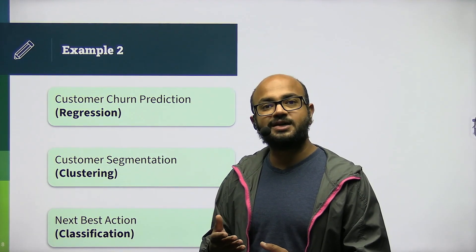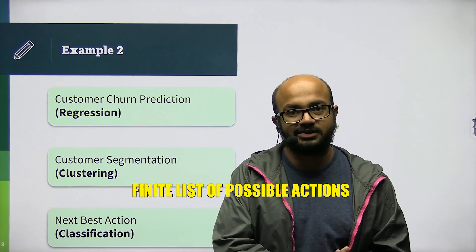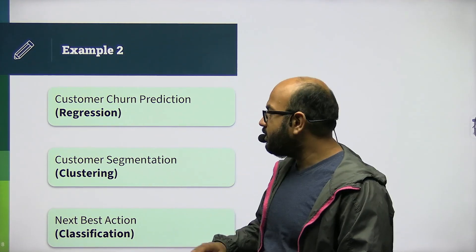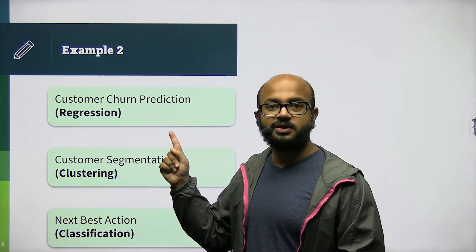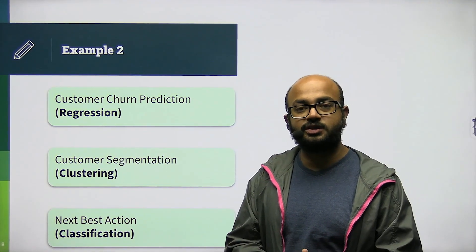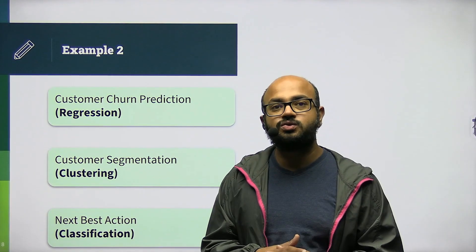So, this next best action is going to come from a finite list of possible actions. This finite list ultimately has to be provided by the business. Right? So, I have a regression problem statement, I have a clustering problem statement, and a classification problem statement. See how business impacts the kind of model that you can choose?